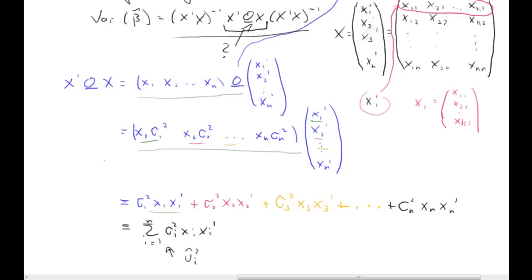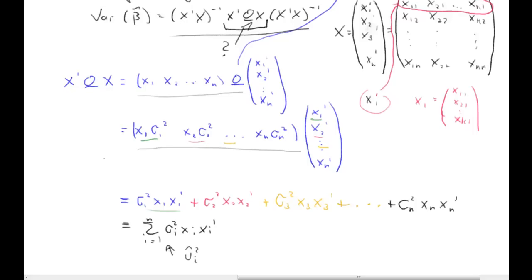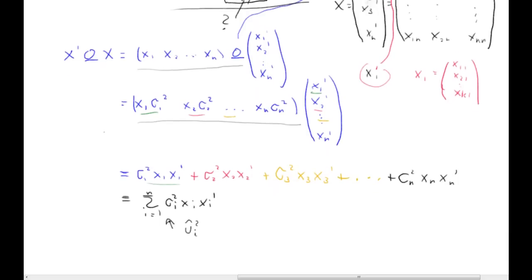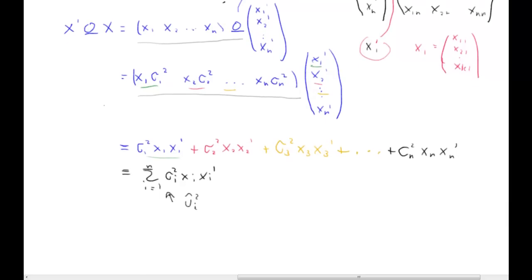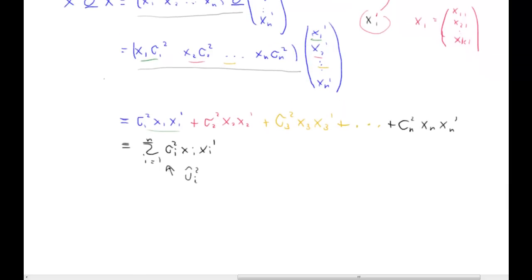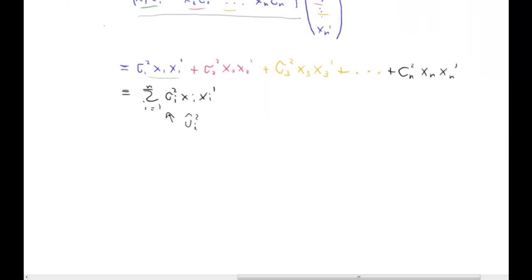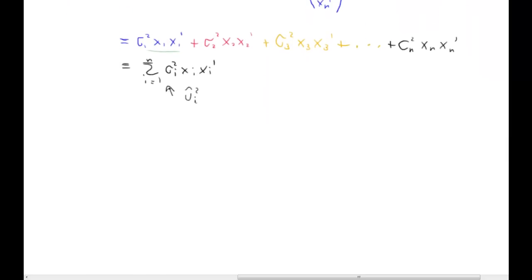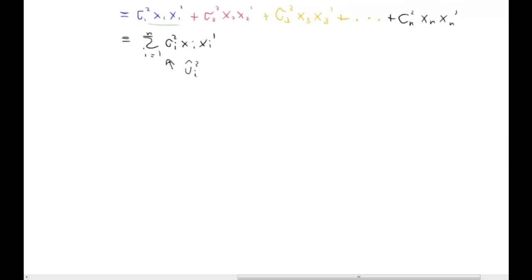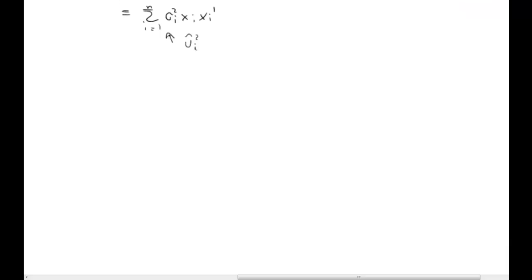The next question is very much related to this, and refers exactly to that case where we don't have zeros on the off-diagonal — when we are dealing with autocorrelated residuals.